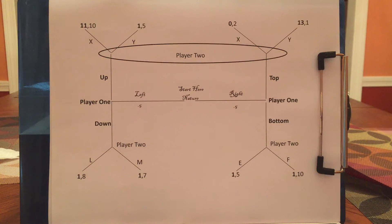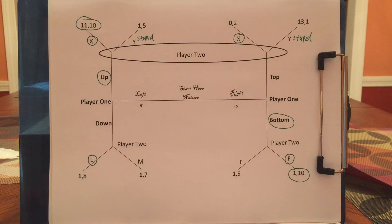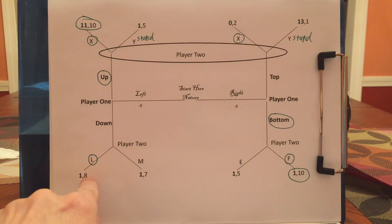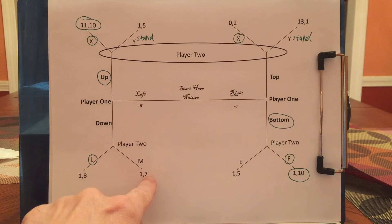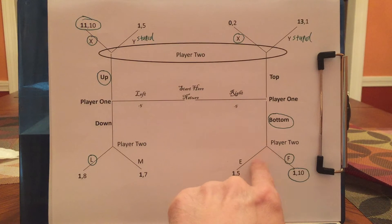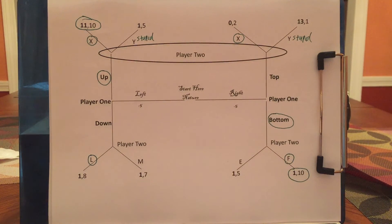Why don't you pause the video and figure out what you think should happen. Let's solve this game. With these games, it's easiest to pick little parts of the game that you know you can solve, solve them, and move on. If player 2 finds himself right here, he knows L gives him 8 and M gives him 7, so he knows he's going to pick L. And if player 2 finds himself right here, he knows that E gives him 5 and F gives him 10, so he'll pick F to get the 10.